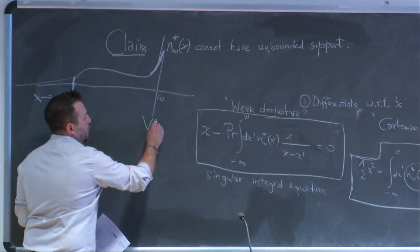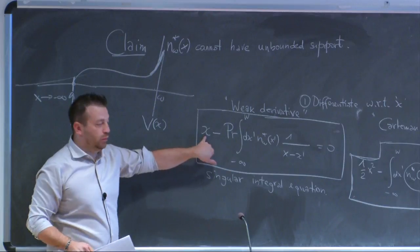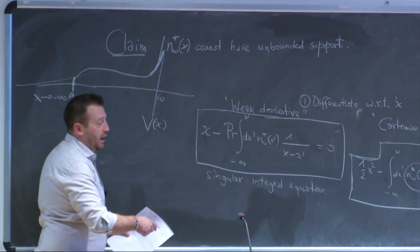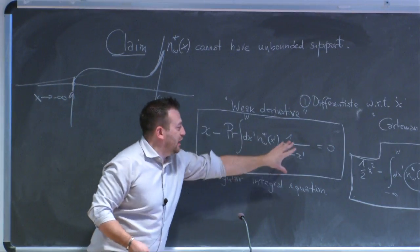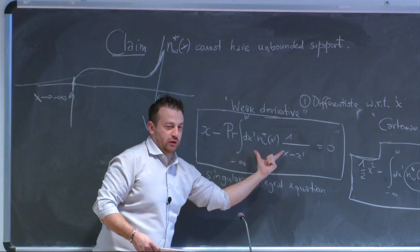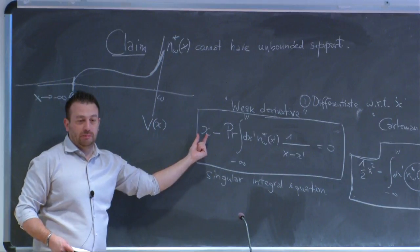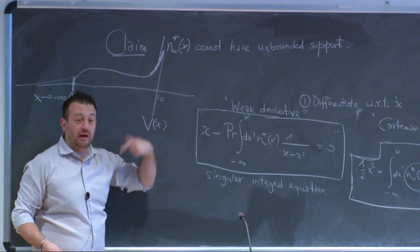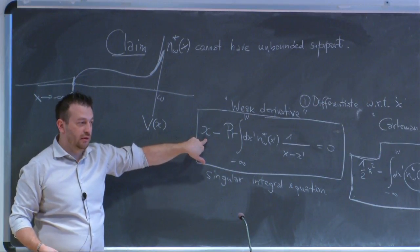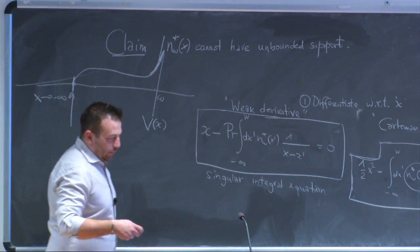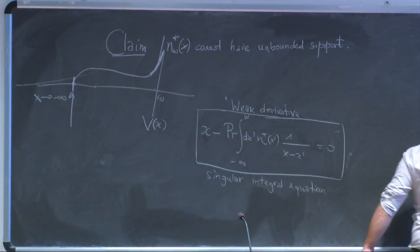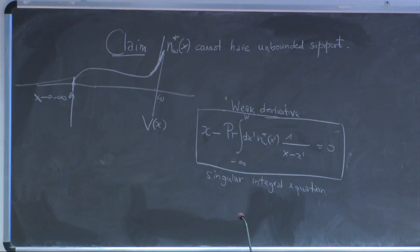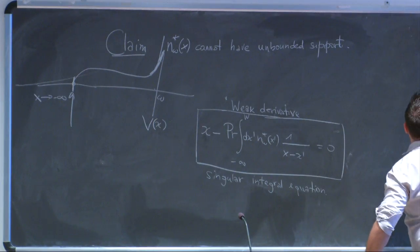This object — the Cauchy principal value integral — will be the same for all models, but this other object will be model-dependent. If we start from another random matrix model characterized by another potential, we will have the first derivative of that potential. The inversion formula for this type of singular integral equation is due to an Italian mathematician whose name is Tricomi.